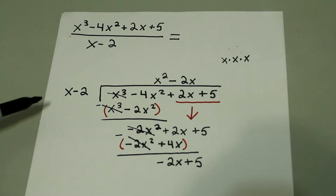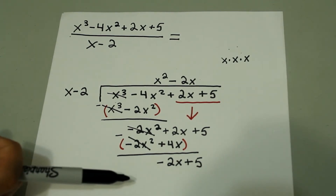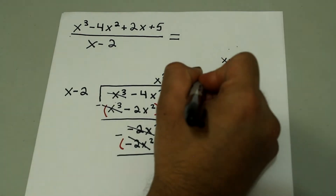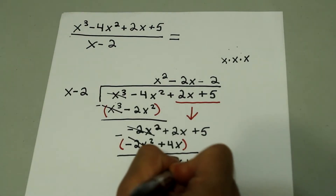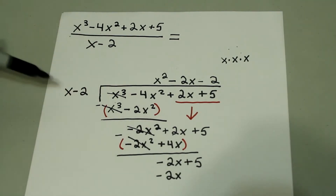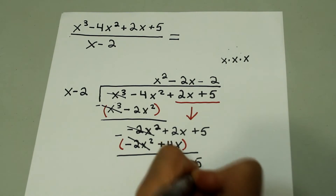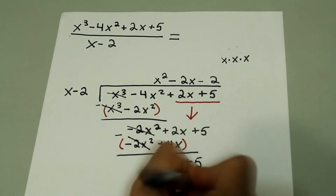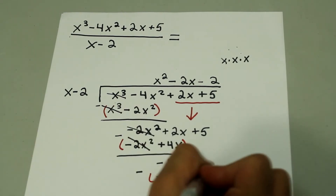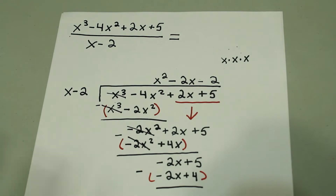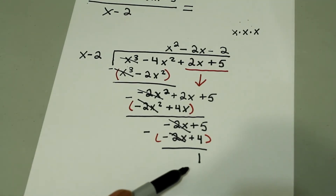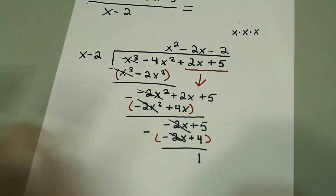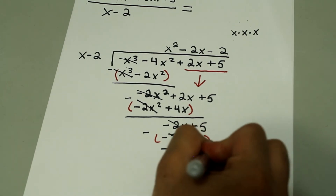Once again, what times x gives me negative 2x? x times negative 2 gives me negative 2x, so write negative 2 over here. Negative 2 times x is negative 2x, and negative 2 times negative 2 is plus 4. Subtract this entire quantity from the top — the first terms cancel, and 5 minus 4 is just 1. At this point, 1 has a lower degree than x, so we can't divide anymore. This 1 is our remainder.